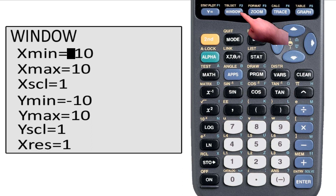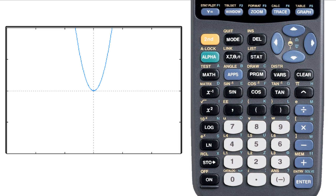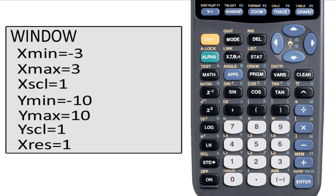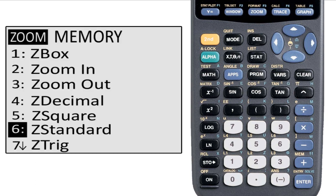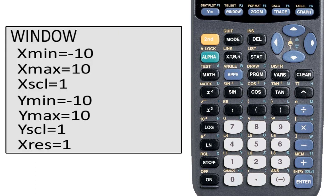So if I decide that I want to view from negative 15 to positive 15 on the Xscale, I can do that. Or I can go from negative 3 to positive 3. And if I want to reset that, I can do that with Z standard. This will change all the window settings back to the way they were.